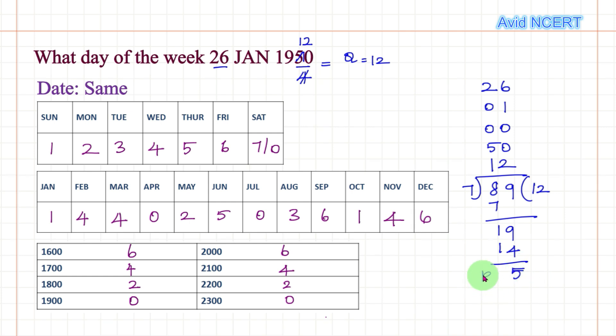We have to look for the code for 5, so it is Thursday. Therefore, 26 January 1950 was Thursday. Thanks for watching. If you have any doubts, please let me know in the comments.